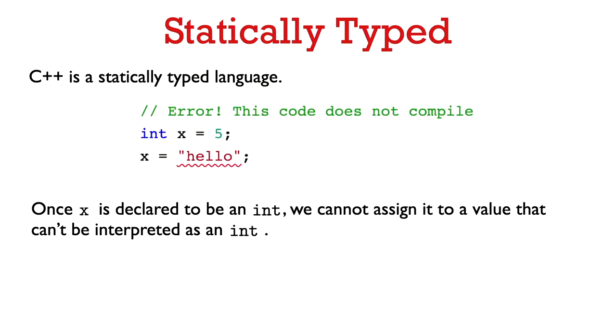So unlike, for example, Python, C++ is a statically typed language. So once we declare x to be an int, we cannot then assign it to be something else that cannot be converted into an int. So this little code fragment here would not compile trying to assign x to be the string hello because that cannot be interpreted as an int.